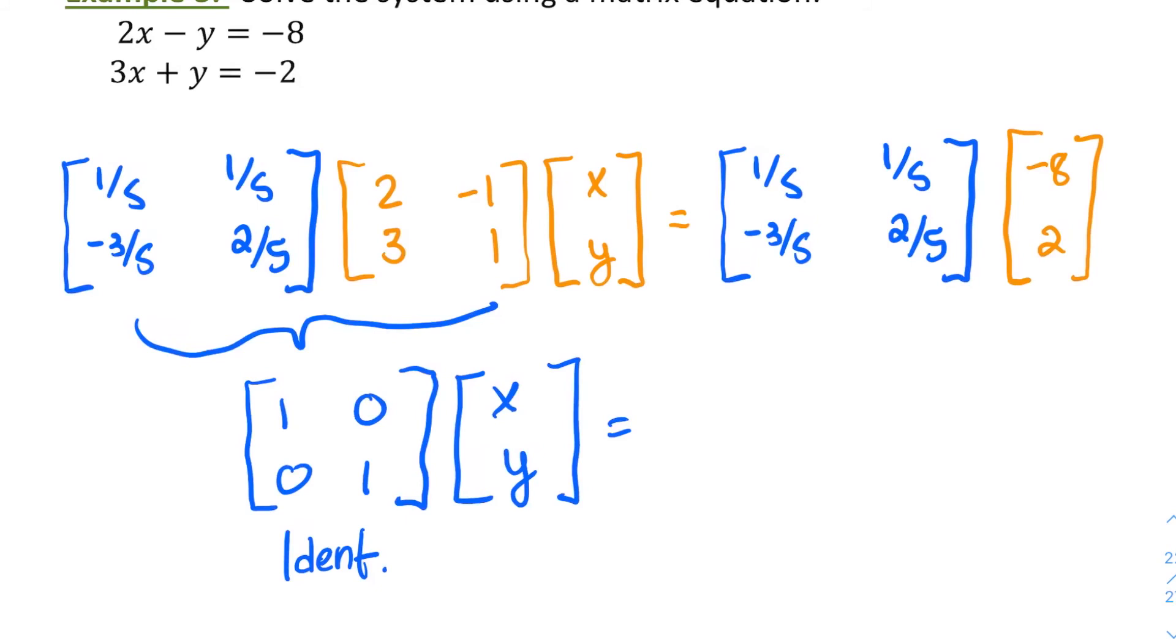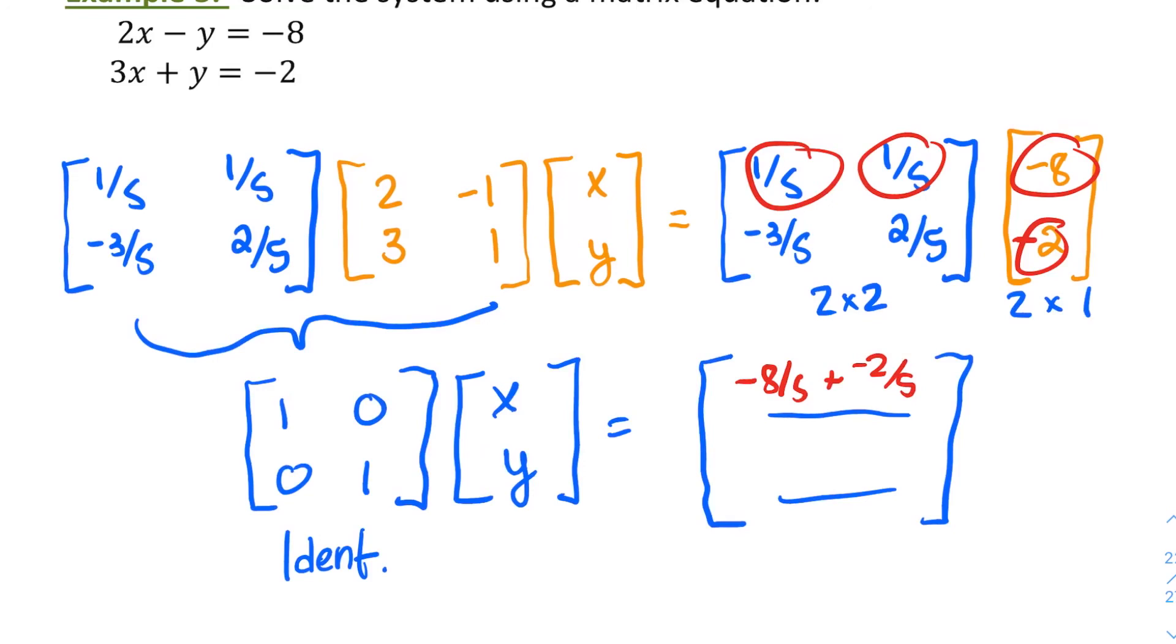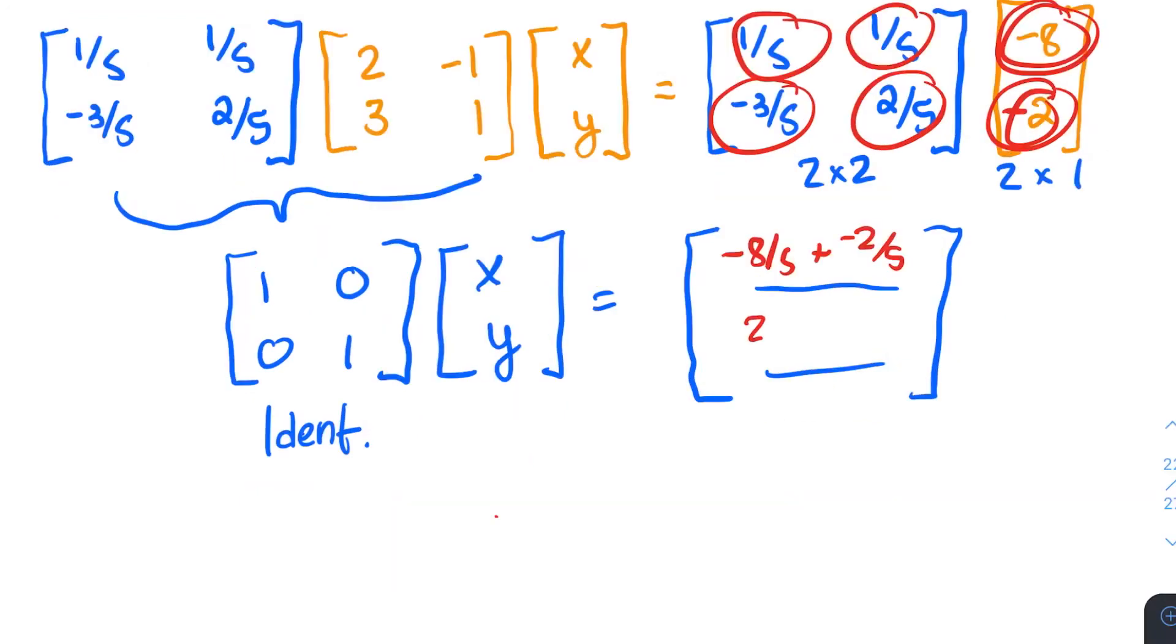I need to go ahead and multiply my matrices on the right. So I have a 2 by 2 matrix and a 2 by 1 matrix. That's going to give me a matrix that's a 2 by 1. I'm able to do that multiplication because I have them multiplied in the correct order there. So if I do that multiplication, I'll have a negative 8 fifths plus 2 fifths. And then I'll have my negative 3 fifths times negative 8 is going to give me 24 fifths. And then if I do my 2 fifths times negative 2, I'm going to have negative 4 fifths. Once you actually add those, you're going to end up with your matrix of your variables x, y equals negative 2 and 4. And those are the values of your variables.